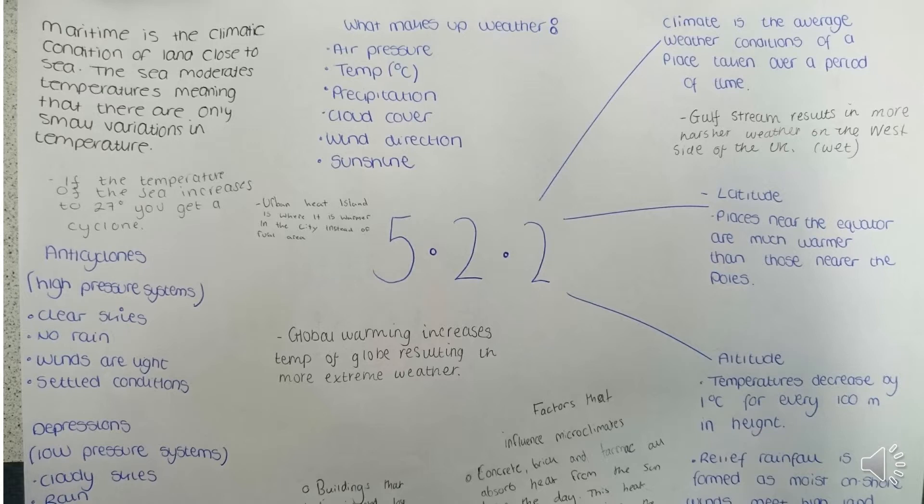Inland areas don't get the cool sea breezes in summer, so it gets nice and hot. In winter, they don't get the warming coastal breezes, so it's really, really cold inland. Continental areas are therefore very cold in winter and much warmer in summer.